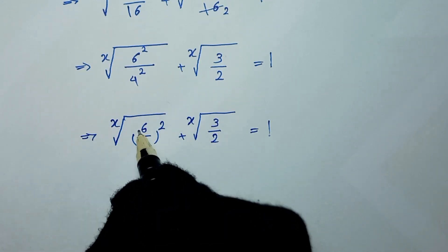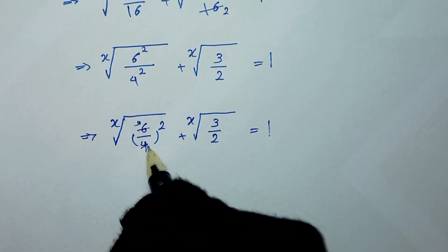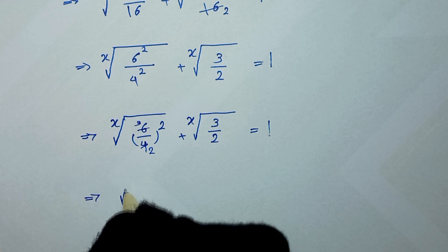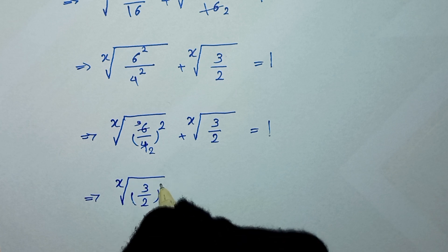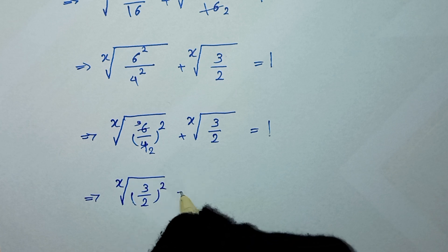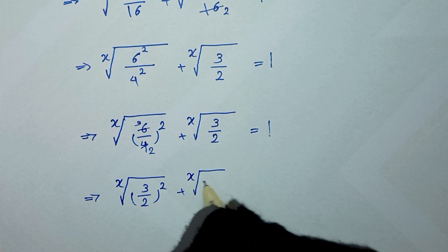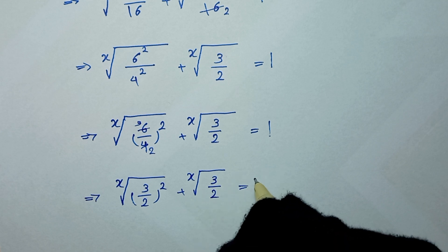Since 6/4 simplifies to 3/2, we can write x-root of (3/2)² plus x-root of 3/2 is equal to 1.